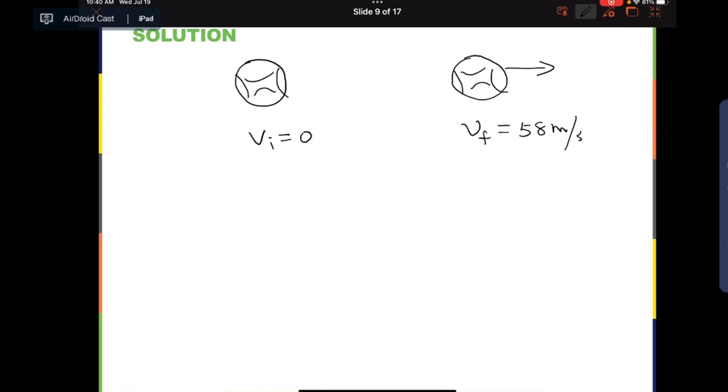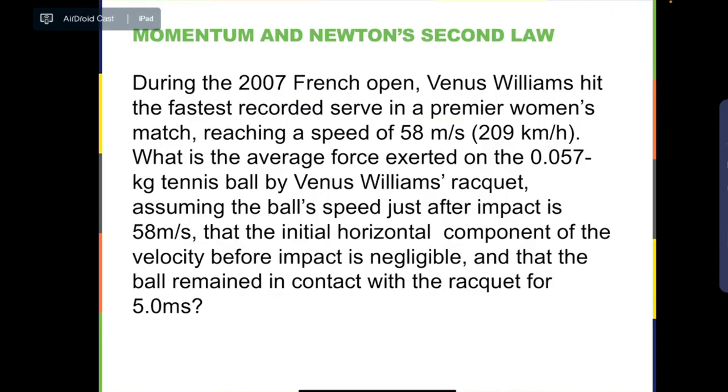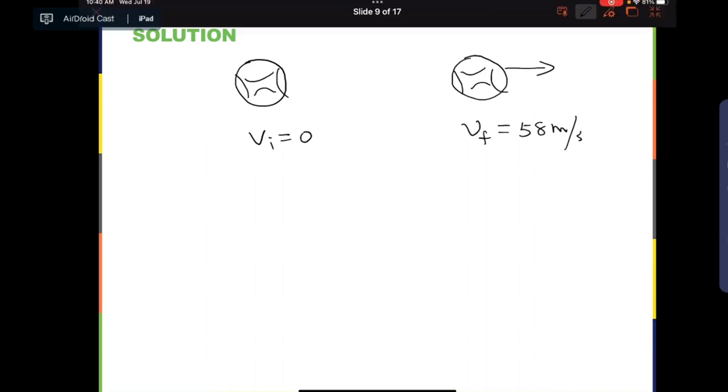The mass of the tennis ball does not change. So this is exactly what we just talked about in the previous page. Therefore, we can say the change in momentum of the tennis ball is equal to mass times change in velocity. And we know that the mass of the tennis ball is equal to 0.057 kilograms. And also, the change in velocity is always final minus initial. Final is 58, and initial is 0.